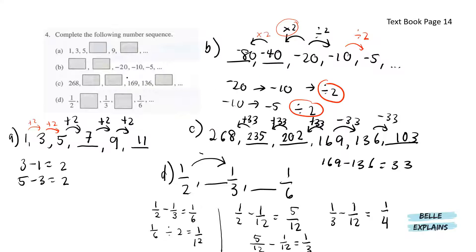For C, we have 268, blank, blank, 169, 136, and blank. In between 169 and 136, we have minus 33. So moving to the right will be a subtraction operation. Moving to the right again will be another minus 33, giving us 103. Since moving to the right is minus, you'll have to add if moving to the left. So 169 plus 33 gives us 202, plus 33 again and plus 33 again.